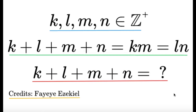Hello! It's Tumpet here. Here's an item on number theory. K, L, M, and N are positive integers such that K plus L plus M plus N is equal to KM and is also equal to LN. Find all the possible values of K plus L plus M plus N. Pause this video if you'd like to give this item a try, but if you're done, let us dive into the solution.